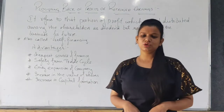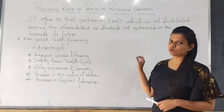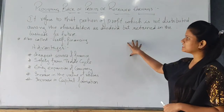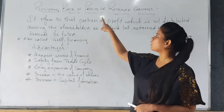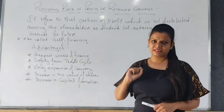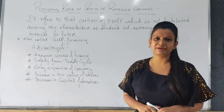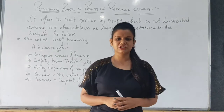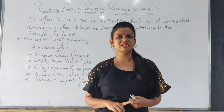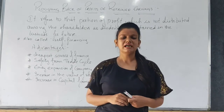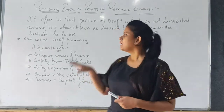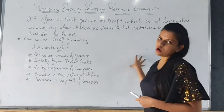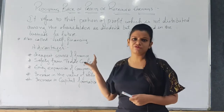Good morning students. Today we'll continue our chapter on sources of funds and sources of finance. Our today's topic is ploughing back of profit or retained earnings. Earlier we studied about long-term sources of finance which included shares, equity shares, preference shares, and debentures. Ploughing back of profits and retained earnings are also long-term or medium-term sources of finance.